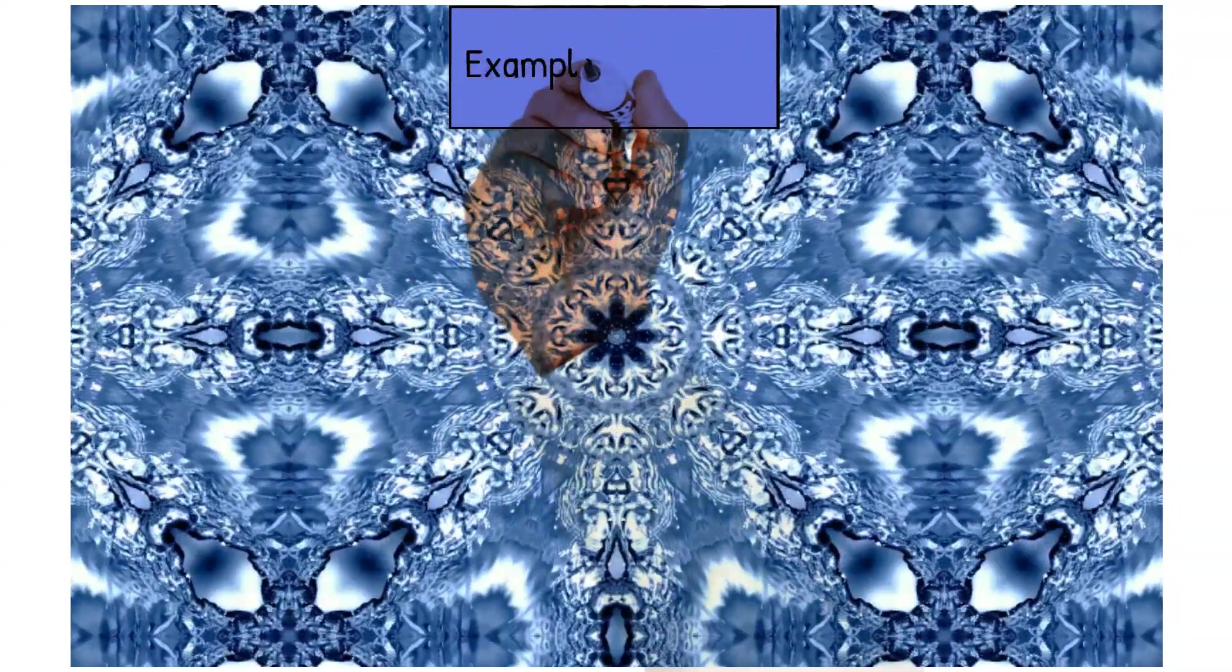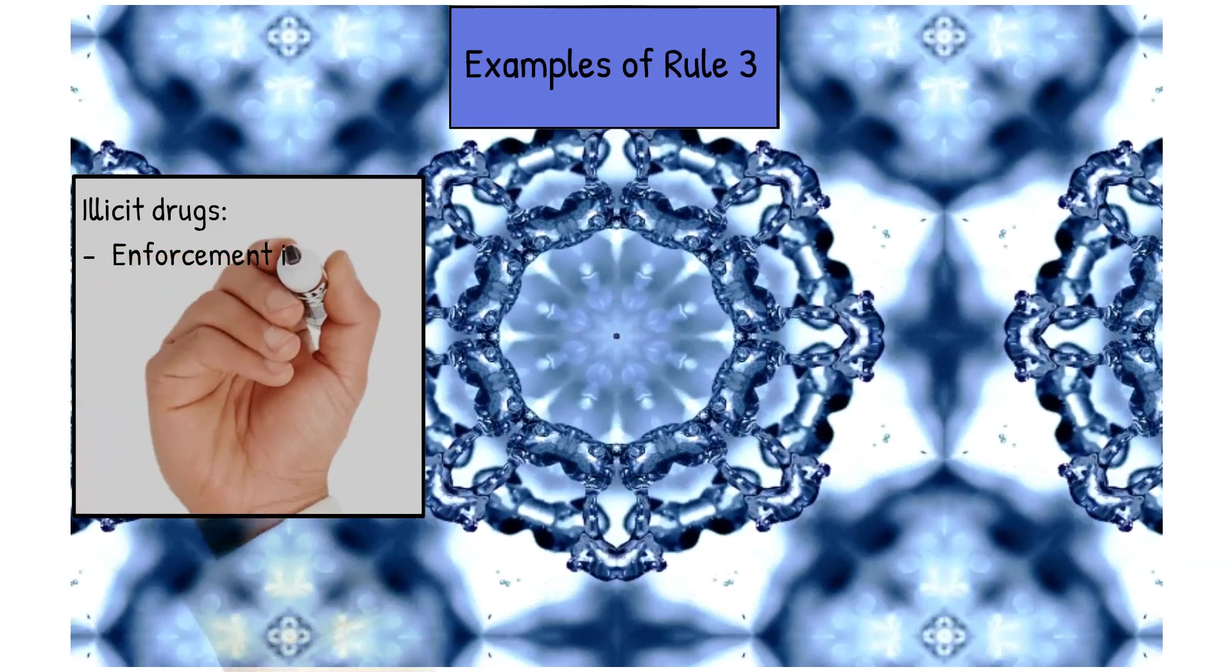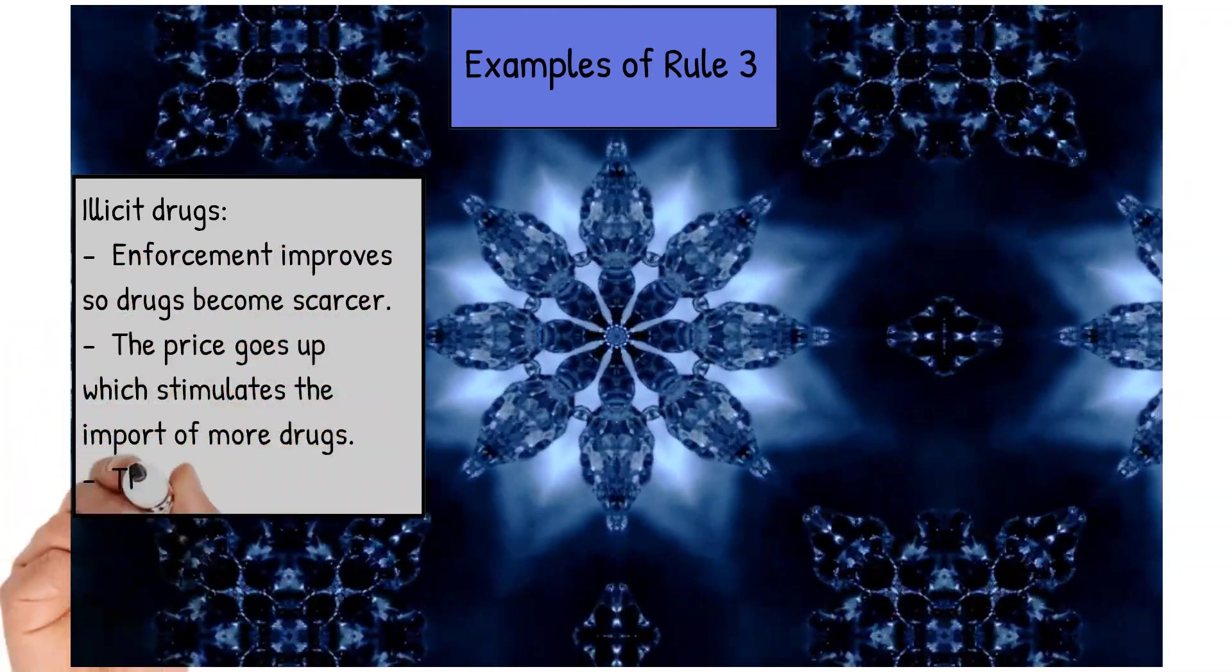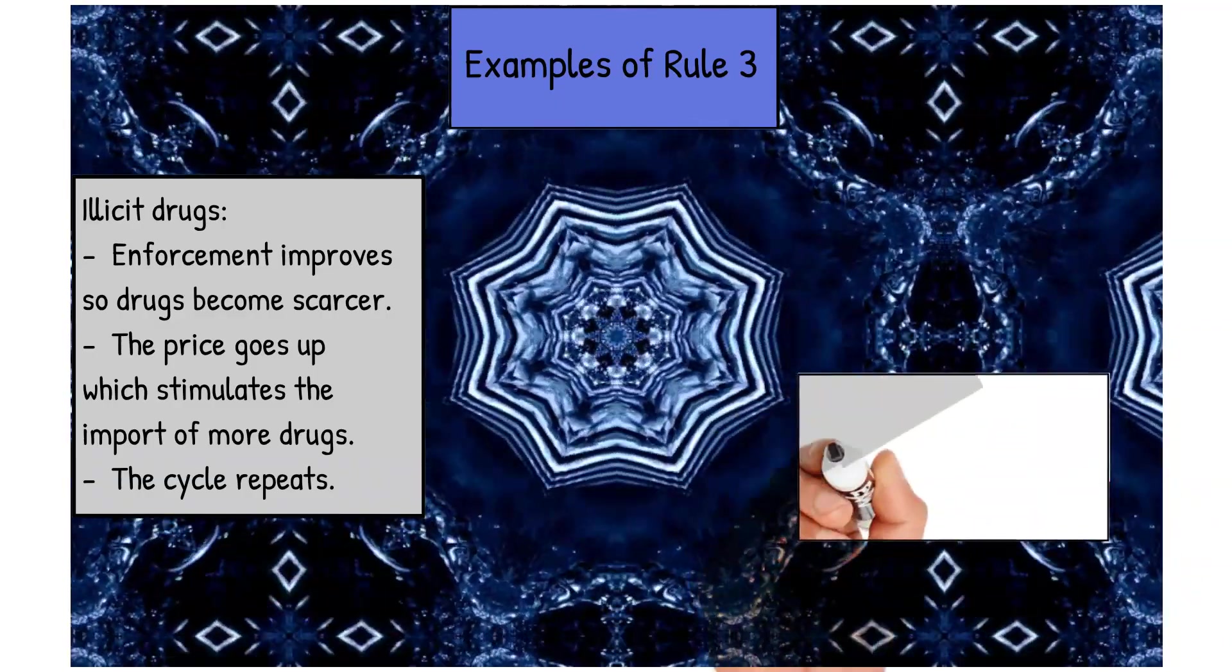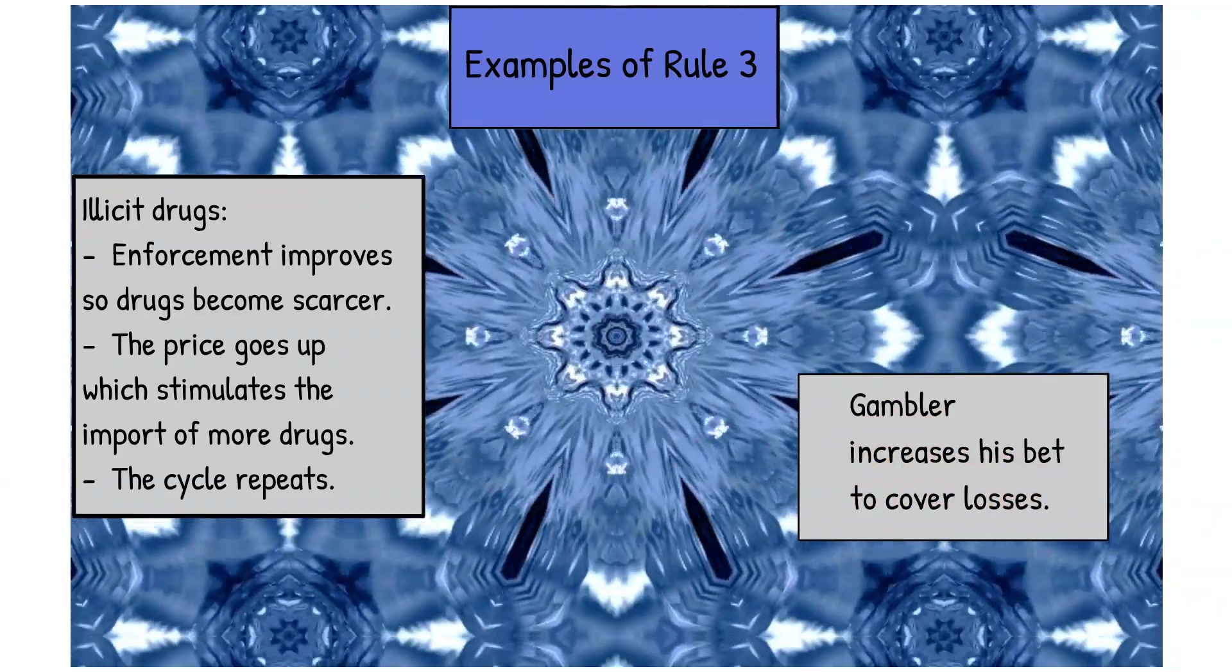Rule three. Examples of rule three is we're going to have one with illicit drugs. Enforcement improves so drugs become scarcer. The price goes up which stimulates the import of more drugs and the cycle repeats. Or a gambler increasing his bet to cover his losses.